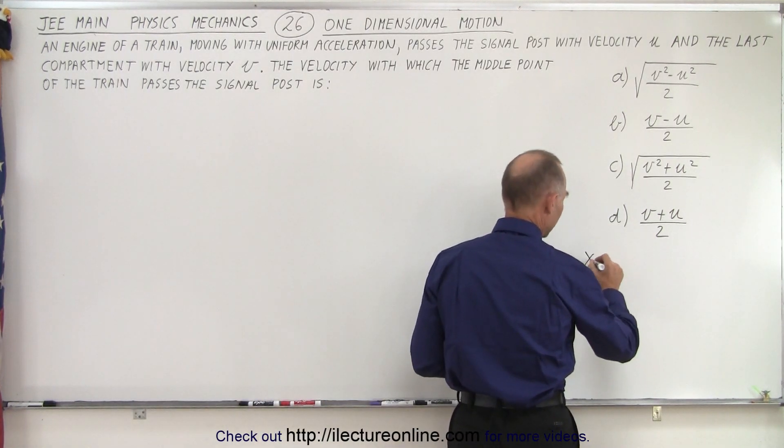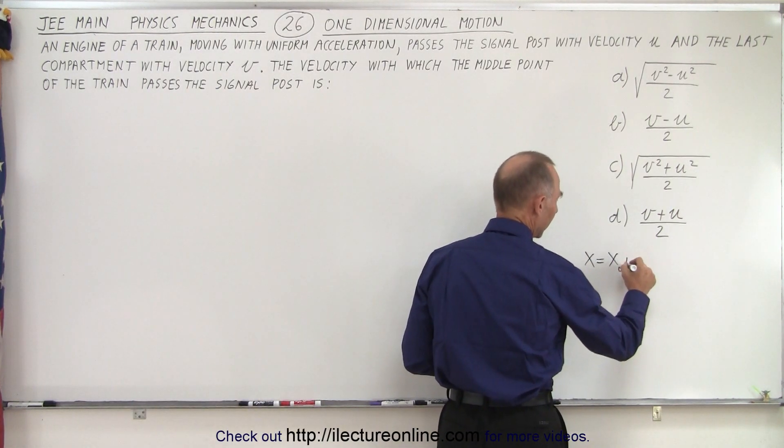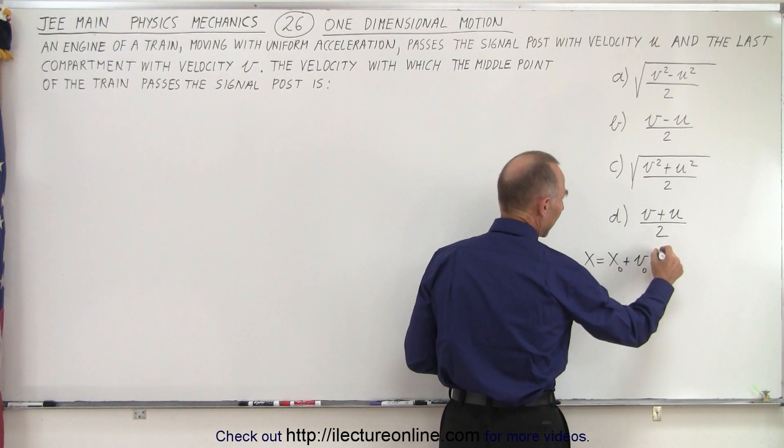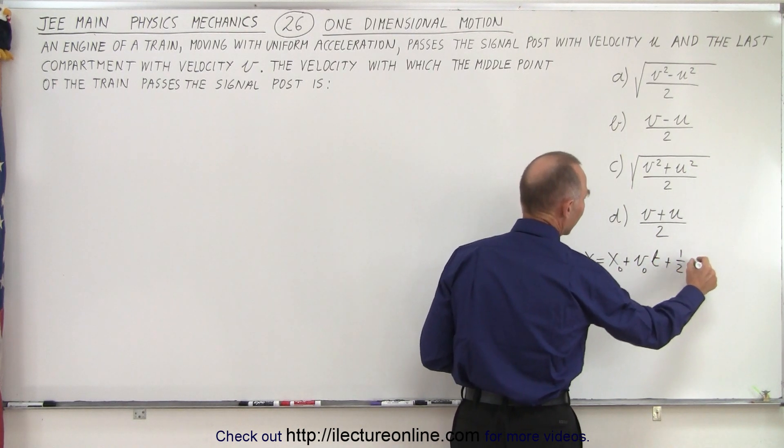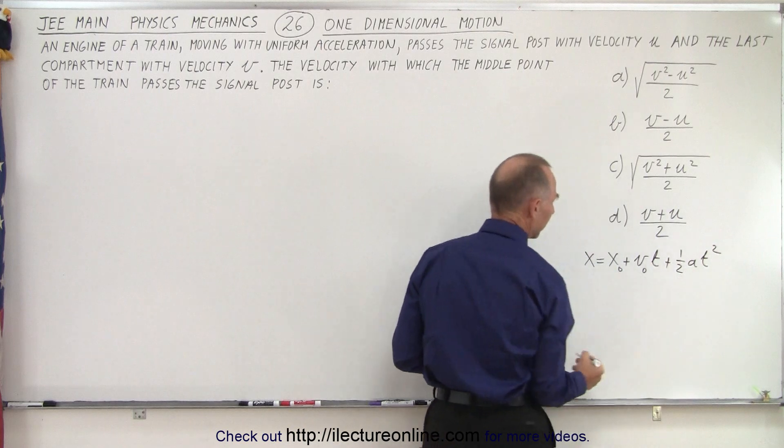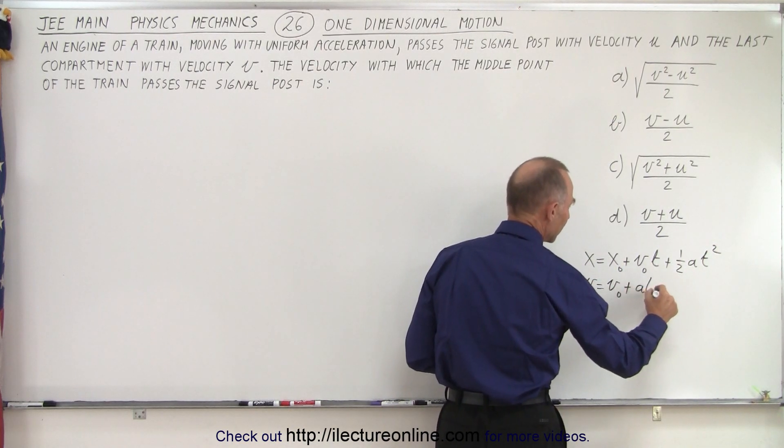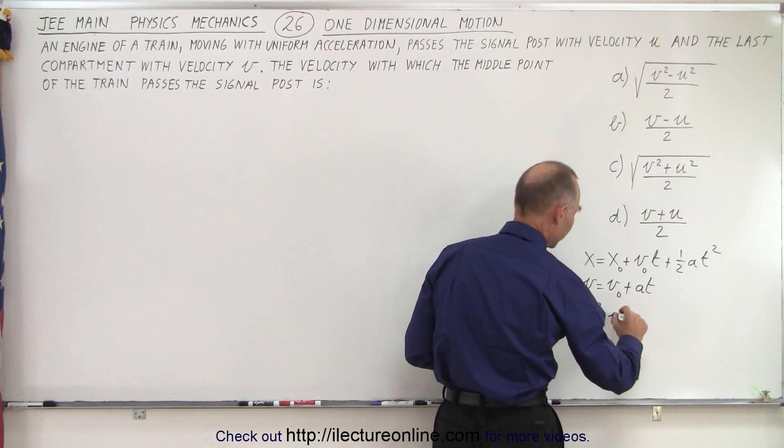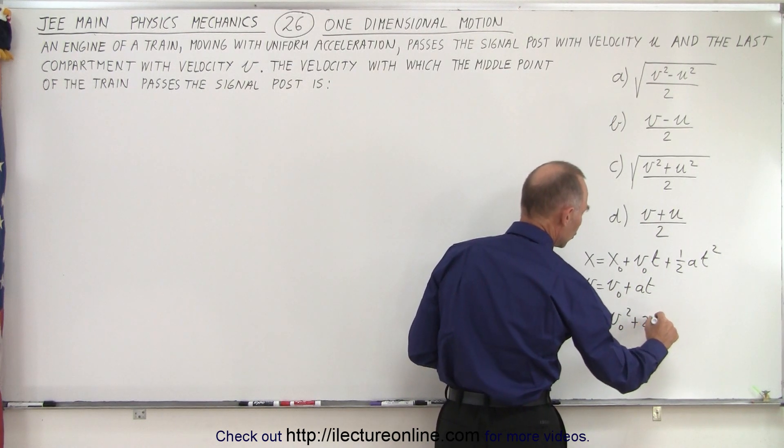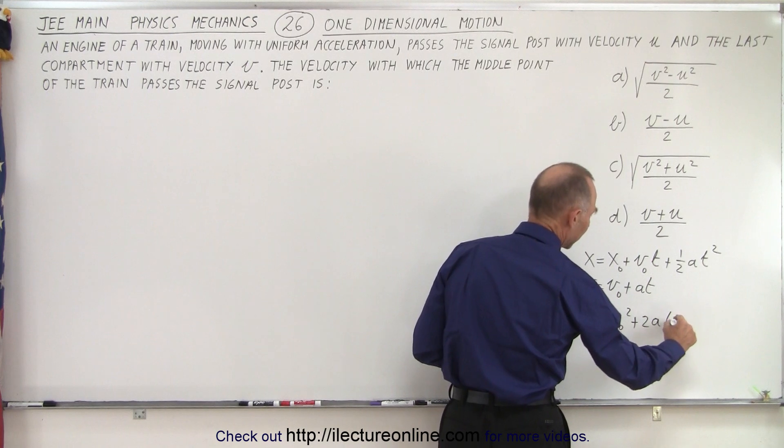The first one is x equals x sub-naught plus v sub-naught times t plus one-half a t squared. The second equation is v equals v sub-naught plus a t, and the third equation is v squared equals v naught squared plus two a times delta x.